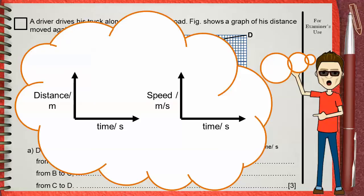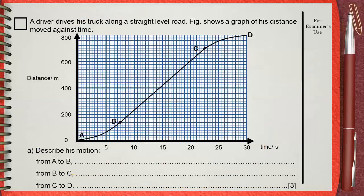In this question we have a distance time graph. We have the distance on the y axis measured in meters and the time on the x axis measured in seconds. From A to B, this shape in a distance time graph shows acceleration.